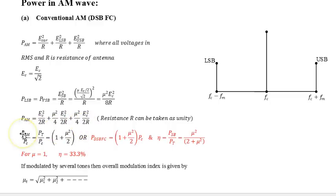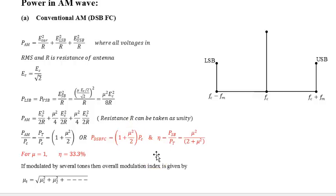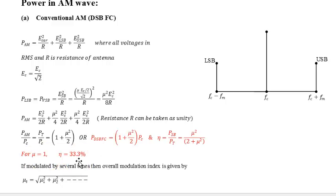Total power in the double sideband full carrier system is (1 + μ²/2)·Pc. The efficiency — power in sidebands to total power — is μ²/(2 + μ²). With μ = 1, the efficiency comes out to 33.3%, which is the maximum efficiency attainable with this kind of modulation. If modulated by several tones, the total overall modulation index μt is given by √(μ1² + μ2² + ...), which helps solve multi-tone modulation problems.